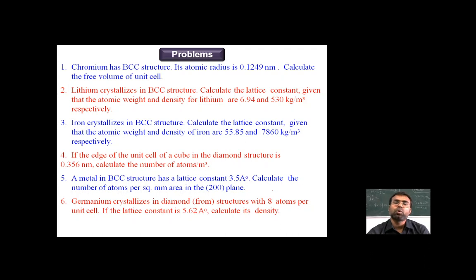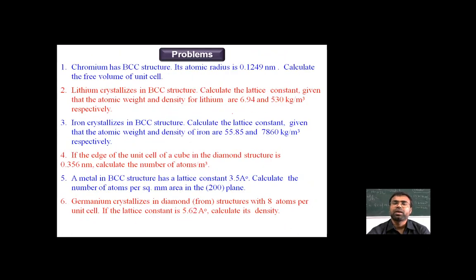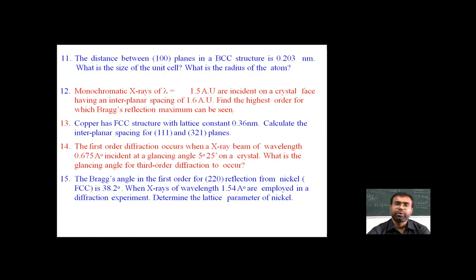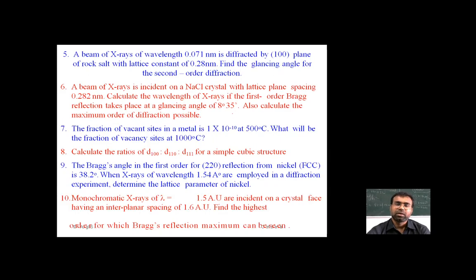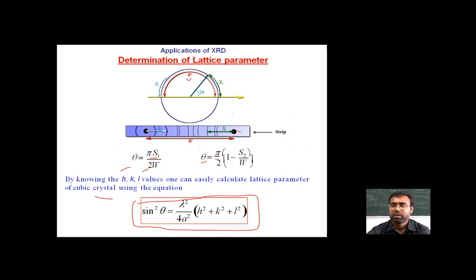There are various problems to practice — for example, calculating the atomic radius of chromium in a BCC structure, calculating the volume of the unit cell for lithium in a BCC structure, and so on. You can note down all these problems and work through them to clear the concepts of X-ray diffraction and related methods. This concludes the lecture. Thank you.